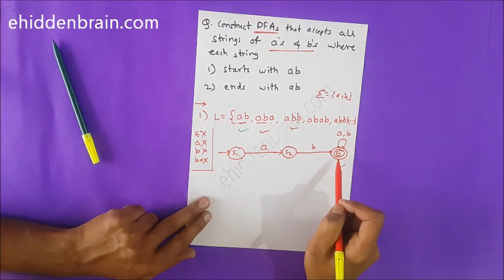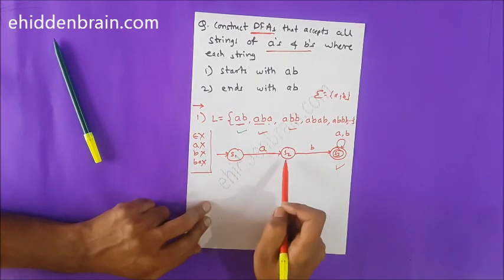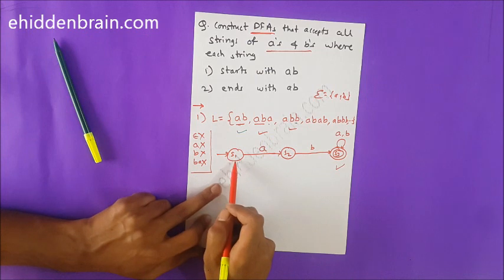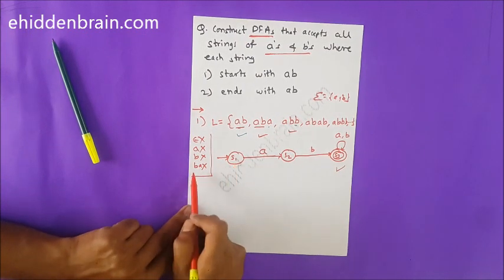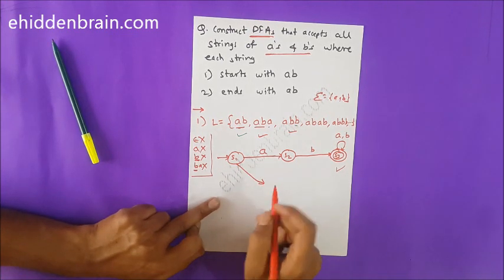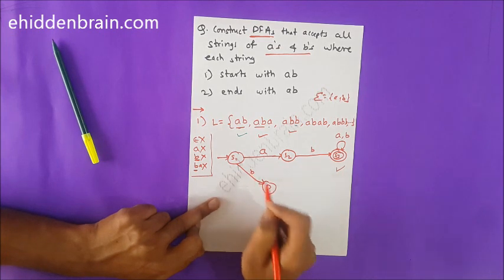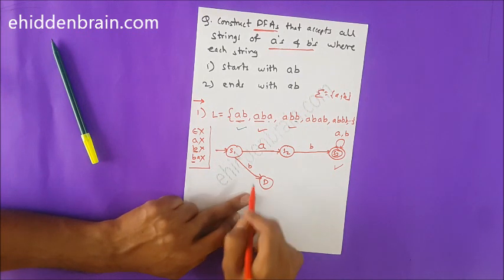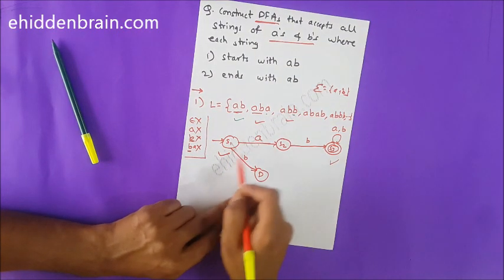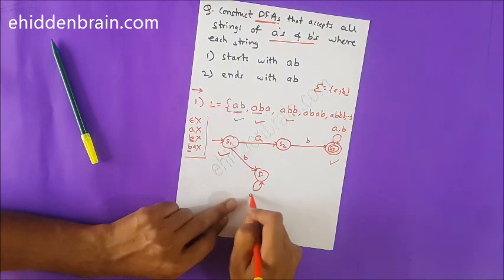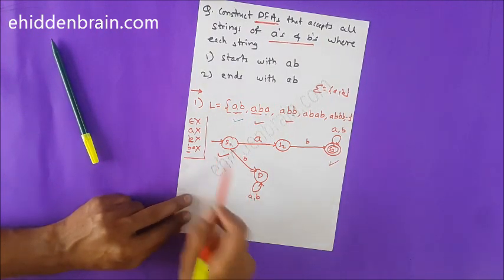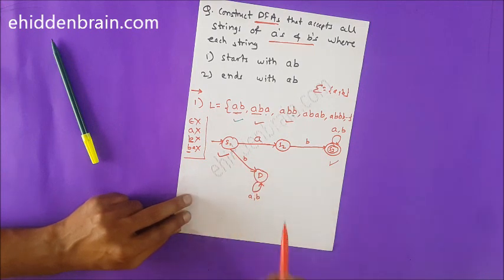S1 and S2 are not yet complete DFA states. If B comes at the start, the string should be rejected. We show rejection using a dead state. So when B comes on S1, it goes to the dead state. To make S1 a valid DFA state it now has both A and B transitions. To make the dead state a valid DFA state, I add a loop on AB — any string starting with B leads to dead input.